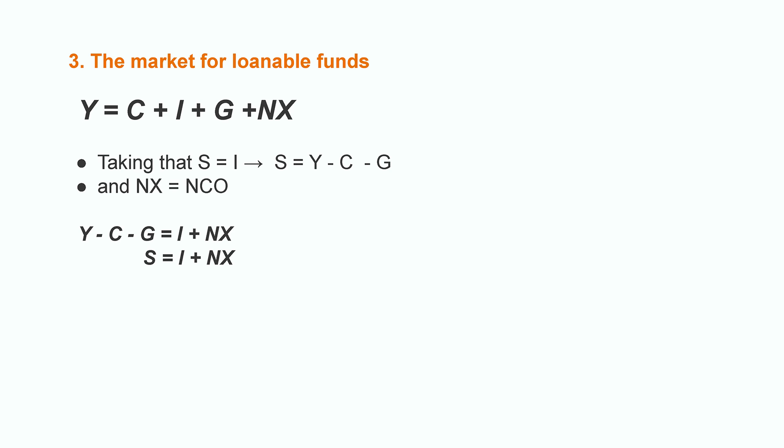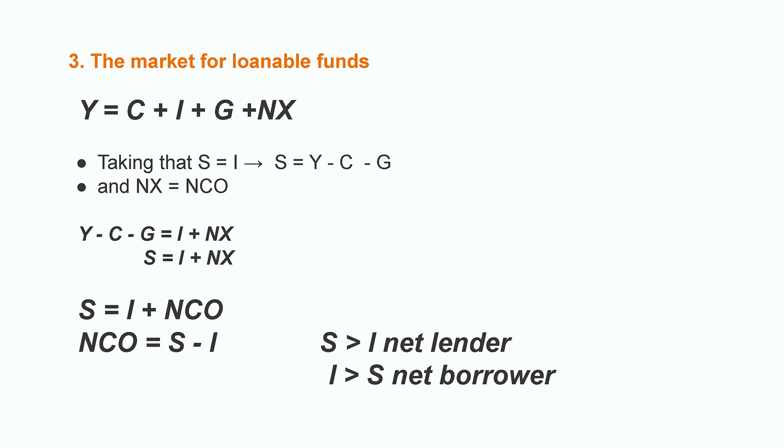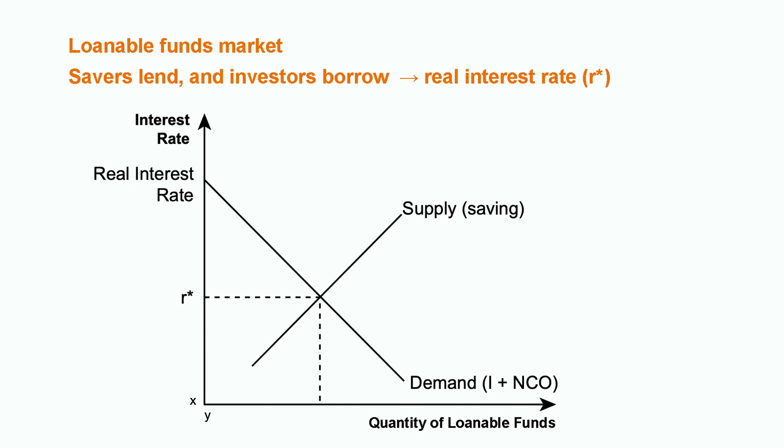This means that the net capital outflow stands for net foreign purchases or the net outflow of loanable funds. If savings exceed investment, we can say that this country is a net lender. However, if it's the other way around, this country is purchasing more assets abroad, so the country will be a net borrower. Now we can discuss the market for loanable funds, where savers lend and investors borrow. The quantity of loanable funds will depend on the real interest rate, R-star. The supply for loanable funds is positively related to R-star, and the demand for loanable funds is negatively related to R-star. The equilibrium interest rate demonstrates that the desired levels of domestic investment and net capital outflow are exactly equal to the amount that people want to save.